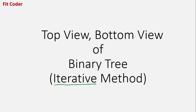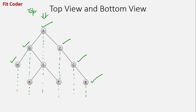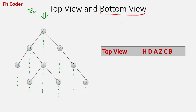We are given a binary tree. The top view consists of those nodes which are visible when we view the tree from the top. The nodes that will be visible are H, D, A, Z, C, and B, because node K will be hidden by node D, L will be hidden by node A, and P will be hidden by node Z.